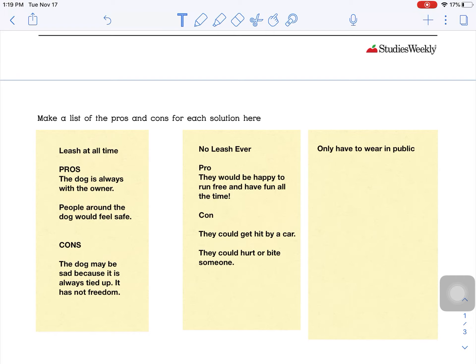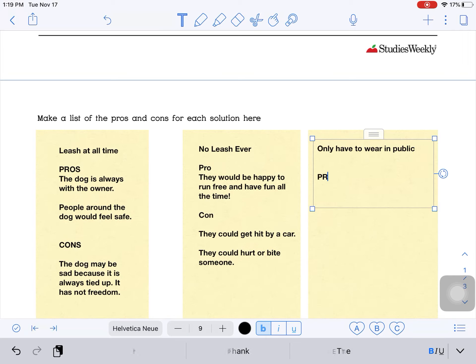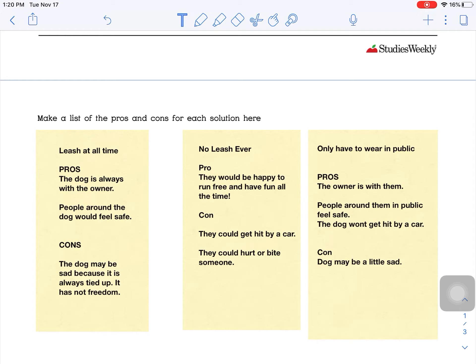So kind of serious things right there. So that's a little scary to me. What about only having to wear in public? So pros again, the owner is with them. People around them in public feel safe. The dog won't get hit by a car if it's on a leash. What about, let's look at our cons. Well, the dog might still be a little sad on the leash. But if we're looking at all of these, all of these scenarios here, leash on at all times, never have to wear a leash or only have to wear one in public, which one do you think is the best solution after going through those pros and cons?